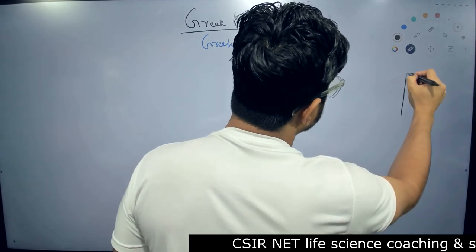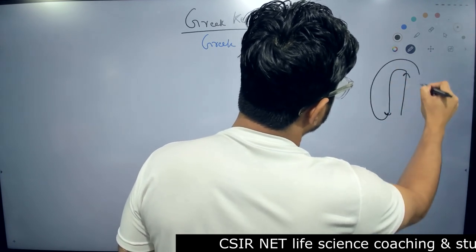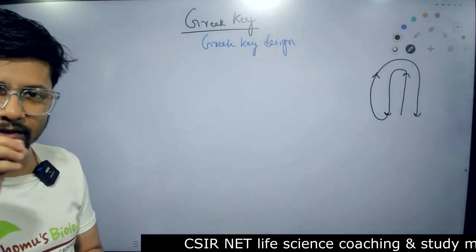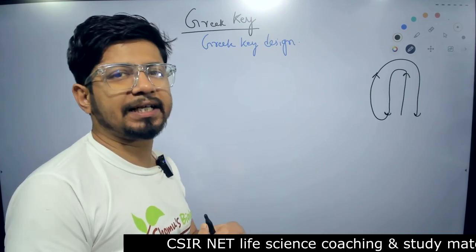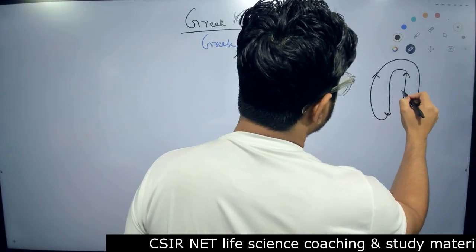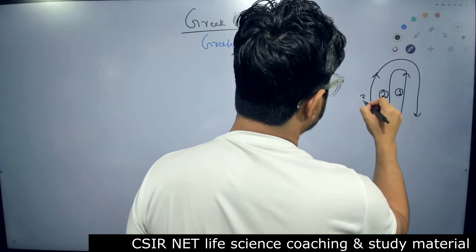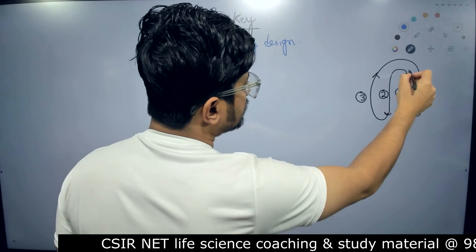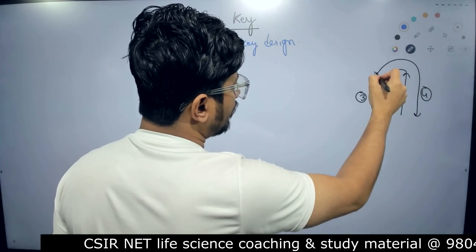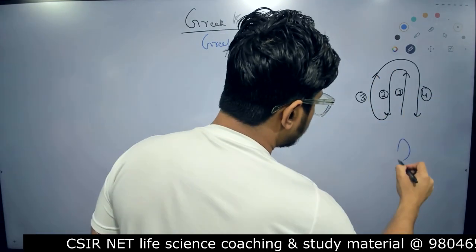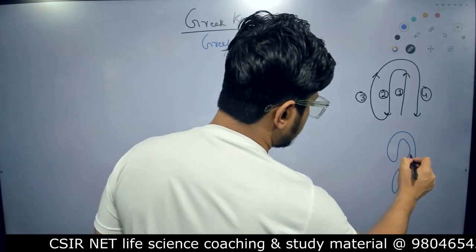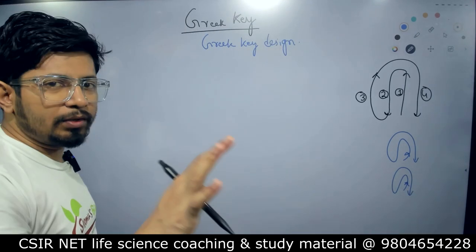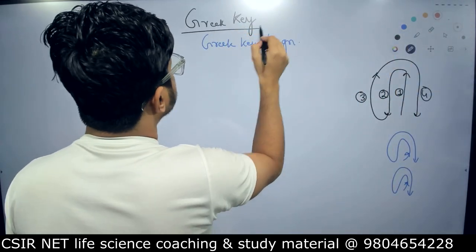The Greek Key motif looks something like this — look at the arrows and the direction I'm drawing them. This is a particular type of fold observed in specific regions of amino acid sequences. There are four different beta strands: strand one, two, three, and four. They are folded in a specific way — the first starting here, then through the bottom, the second, the third going to the top, and the fourth back to the bottom. That is how the Greek Key motif structure is formed.